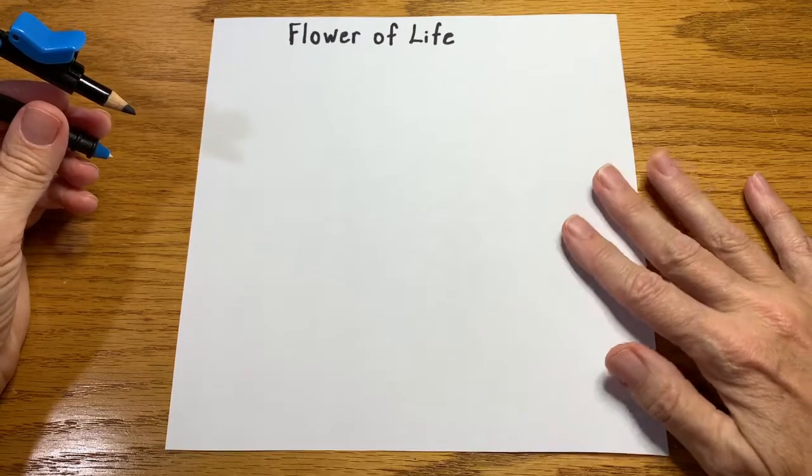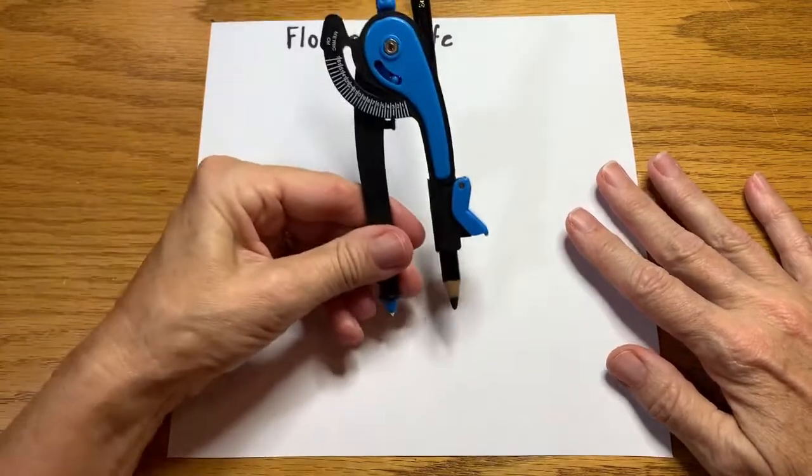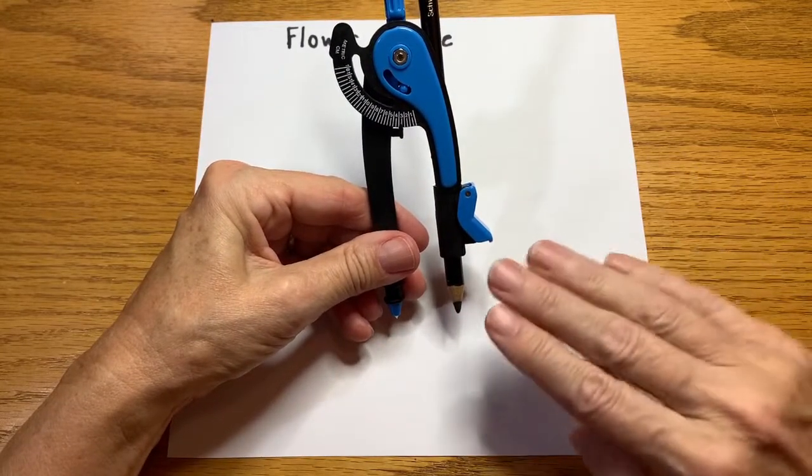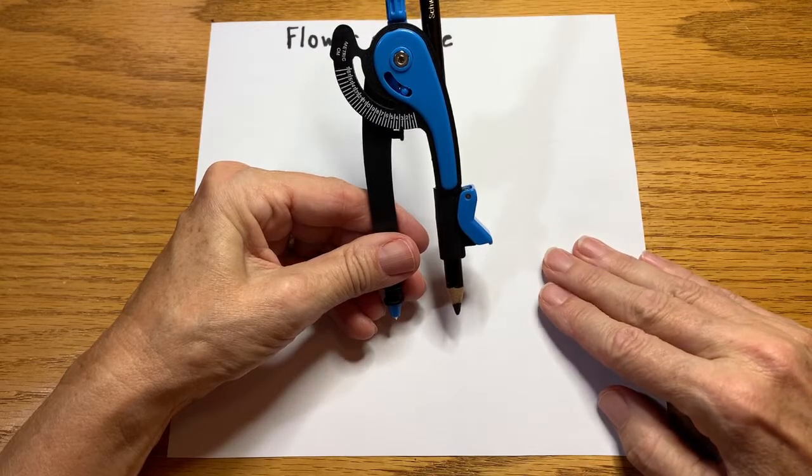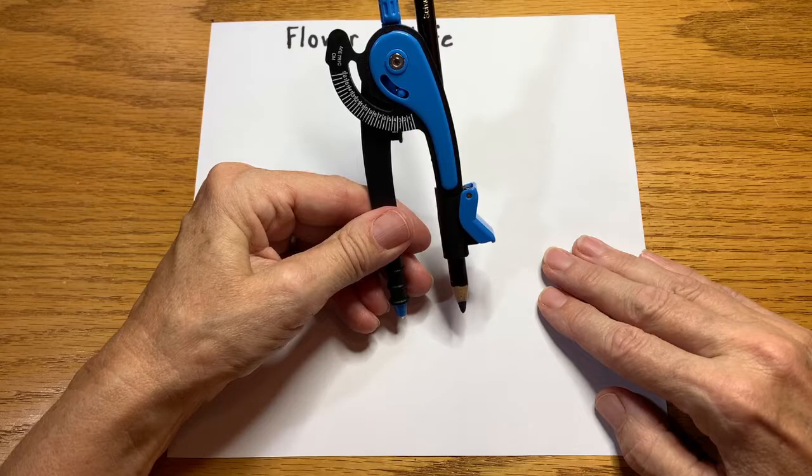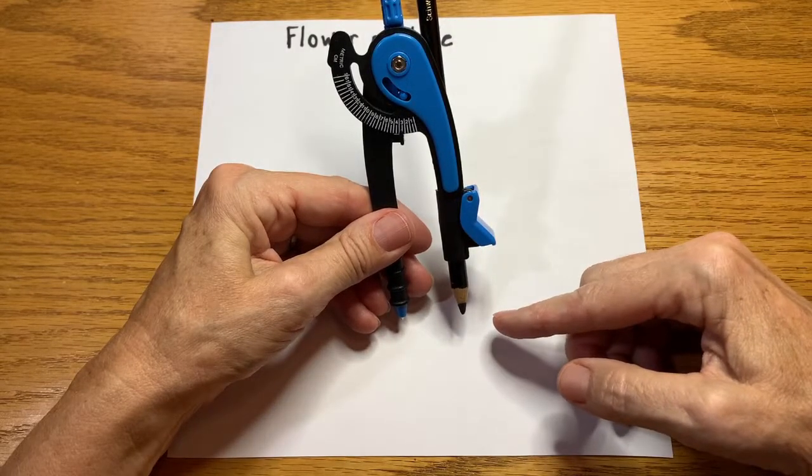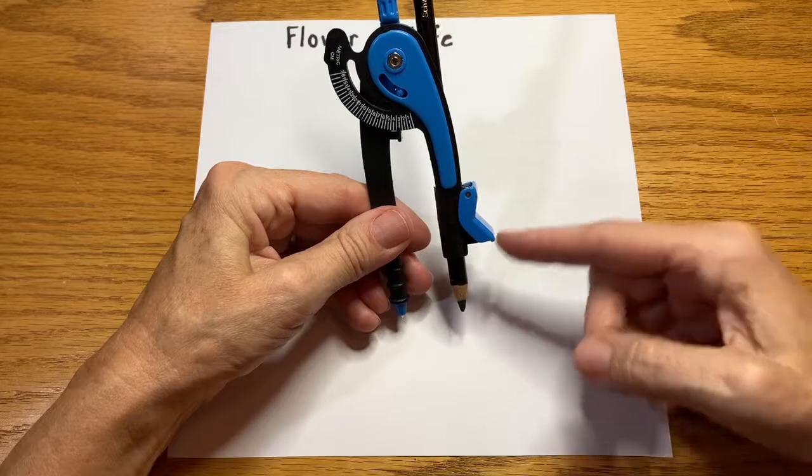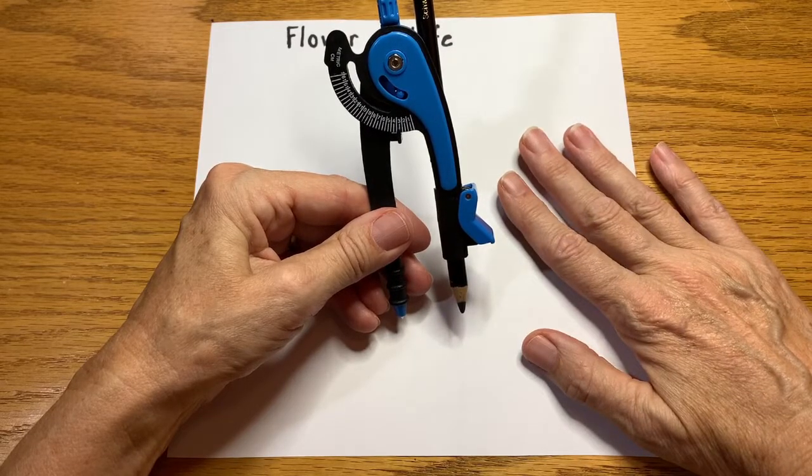You'll need a blank piece of paper and a compass with a pencil. The type of compass you use does not matter. This is a safety compass I use in my classroom. You'll probably just use a regular number two pencil. I've got a black artist pencil in here so that you can see it on the paper when I draw.